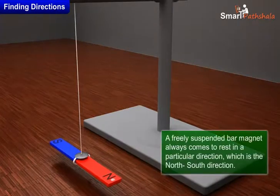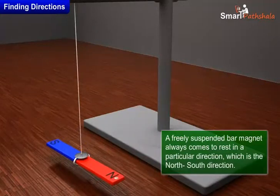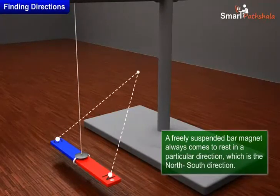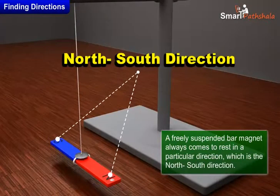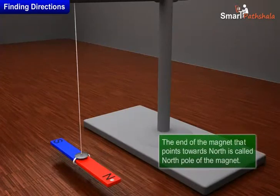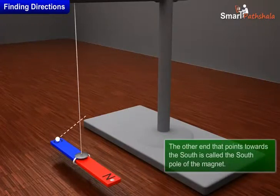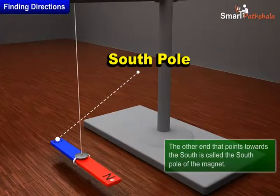We find that a freely suspended bar magnet always comes to rest in a particular direction which is the north-south direction. The end of the magnet that points towards north is called the north pole of the magnet. The other end that points towards the south is called the south pole of the magnet.